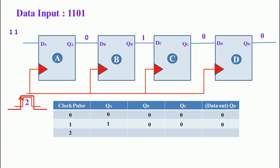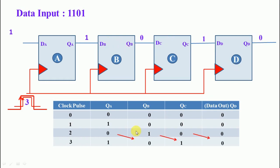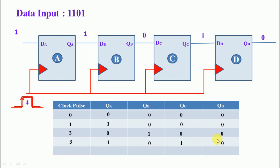After the third clock pulse, the data shifts as follows: the first flip-flop output becomes 1, the second flip-flop output becomes 0, the third flip-flop output becomes 1, and the fourth flip-flop output becomes 0. Each bit has moved one position to the right along the chain. Next we are going to apply the fourth clock pulse.